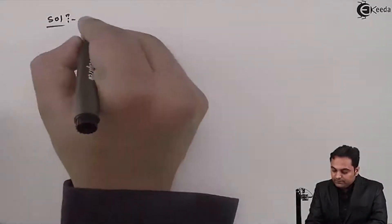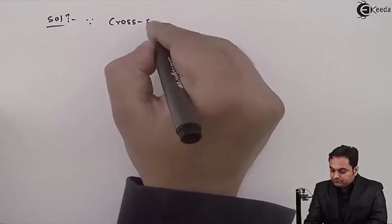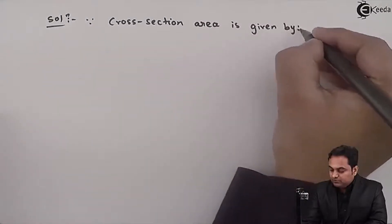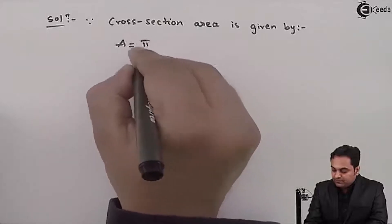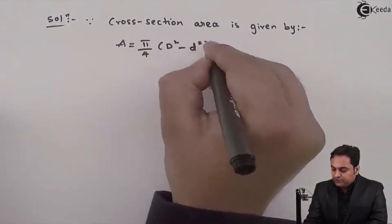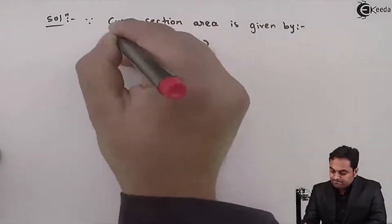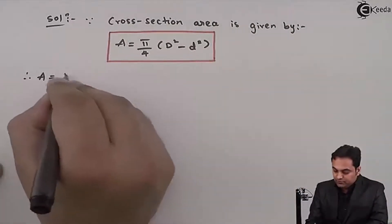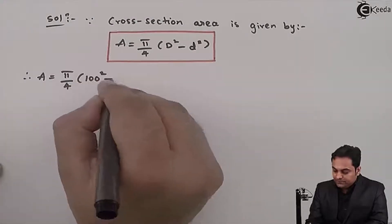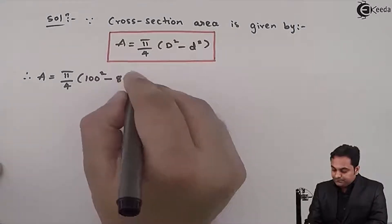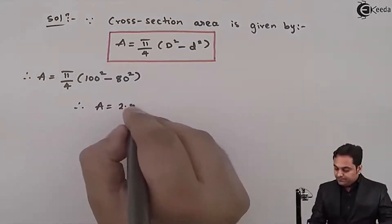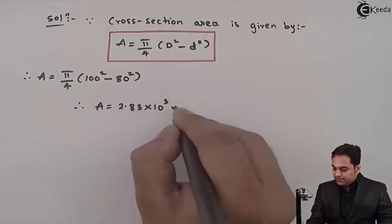First I'll calculate the area. Since the cross-sectional area of a hollow circular section is given by A = π/4 × (D² − d²), therefore A = π/4 × (100² − 80²) = 2.83×10³ mm².